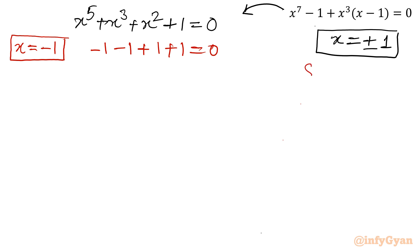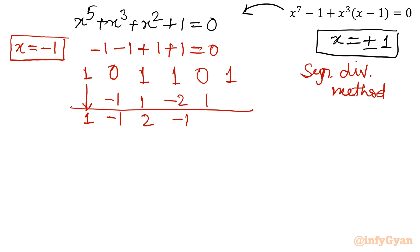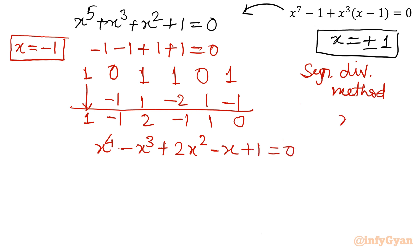Again I will use synthetic division method — it is not only quicker but also gives correct values. Writing all the coefficients: 1, 0, 1, 1, 1, 0, 1. Leading coefficient as it is: 1. Then 1 times minus 1 gives minus 1; continuing: negative 1, 1, 2, negative 2, negative 1, 1, 1, negative 1, 0. So the equation converts into degree 4: x power 4 minus x cube plus 2x square minus x plus 1 equal to 0, with one additional solution x equal to minus 1.